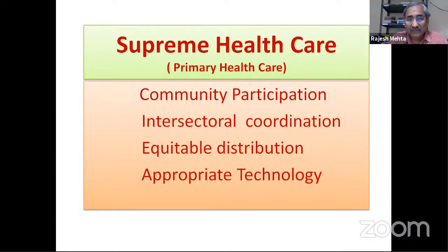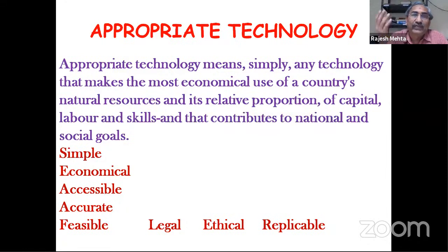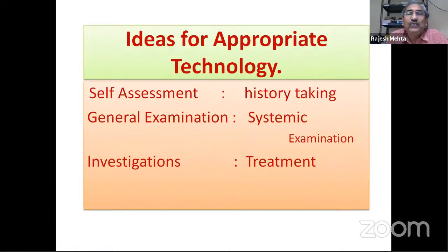These are the four pillars of supreme healthcare. Now, appropriate technology is technology that should be simple, economical, accessible to all, accurate, and scientifically proved. It should be feasible — for example, if you are going to a village where there is no electricity, however useful the technology may be, if it is not feasible for that area, it is not appropriate technology. It should also be legal, ethical, and replicable for large masses. We have listed more than 100 such examples which we want to develop in collaboration.